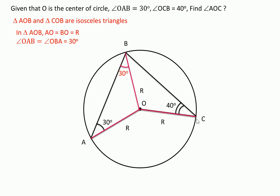And in isosceles triangle, opposite angles are equal. So if angle OCB is 40 degrees, then angle OBC is also 40 degrees.